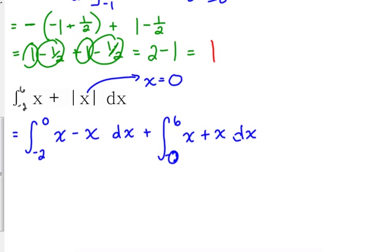Well, look at what happens. The first piece there, x minus x, that's zero. That goes away. We don't even have to worry about that part. And the other part, x plus x is 2x. Well, that's nice. Because that's easy to integrate, right? That's x squared.